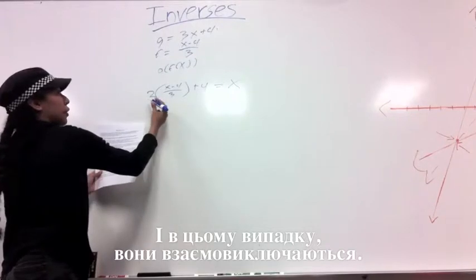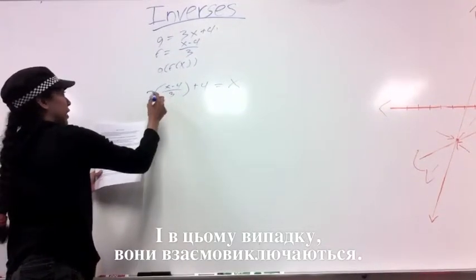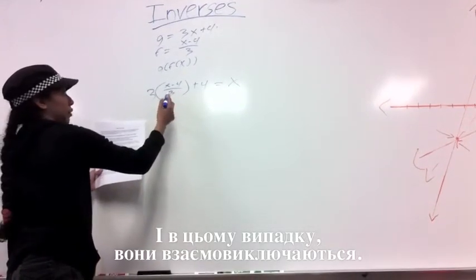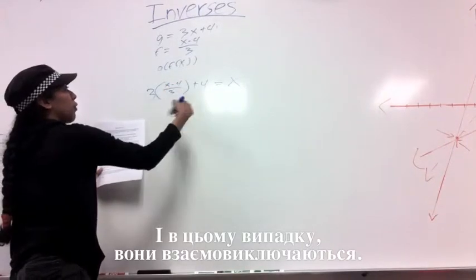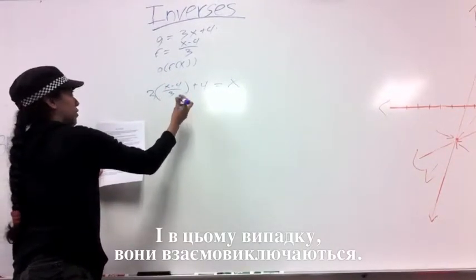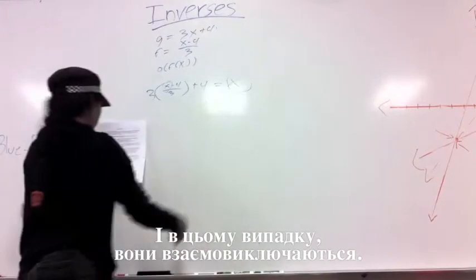As you can see, we have 3 and 3 again, both canceling out. 3 times 3, 3 divided by 3. And then we have a negative 4 and a positive 4 that also cancel out, leaving behind only this x variable.